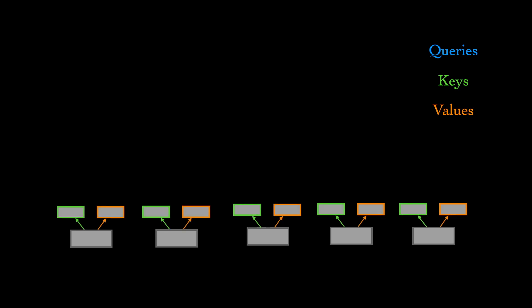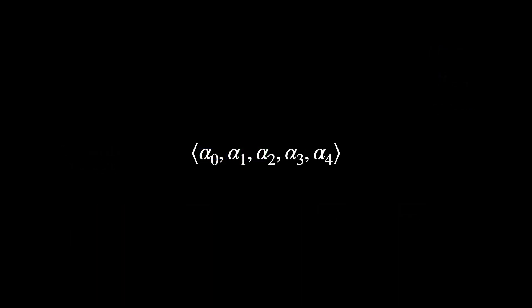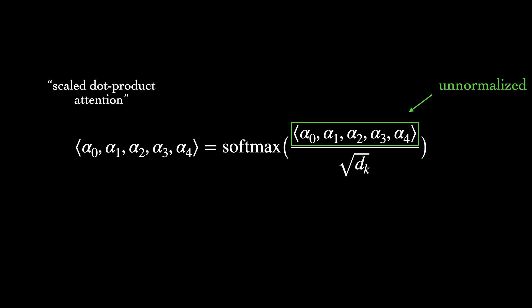Let's take a look at how a single head of multi-head attention works. Here we have our initial embeddings at the beginning of the encoder, one for each word. We need to extract a key and value vector for each one, which are implemented as linear transformations of the embeddings. We'll also get a query vector for each word, but let's just focus on the first word for now. We compute a dot product between the query and each key, including the key from the same word. Determining compatibility between queries and keys in this way is known as dot product attention. The resulting alpha vector is basically a set of unnormalized weights. To normalize them, so that they are non-negative and sum to one, they get passed to a softmax.